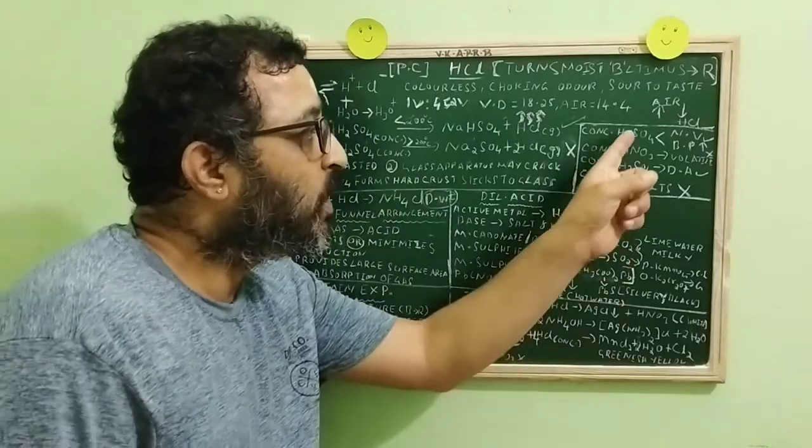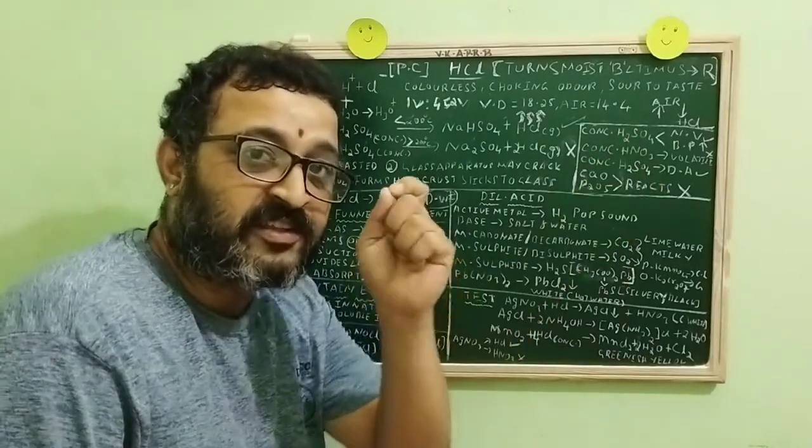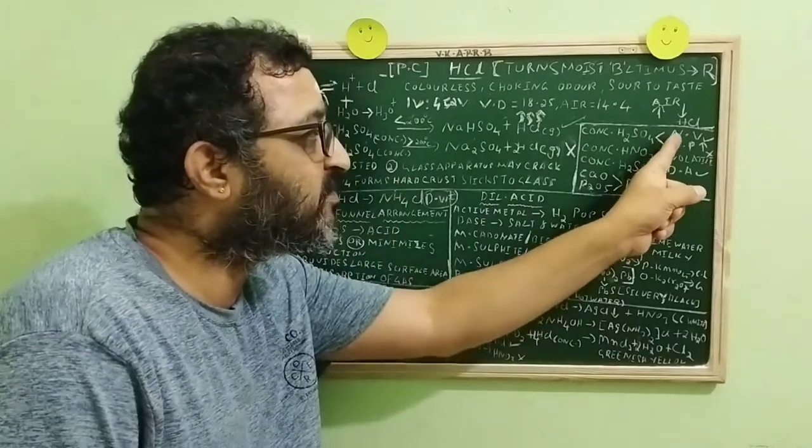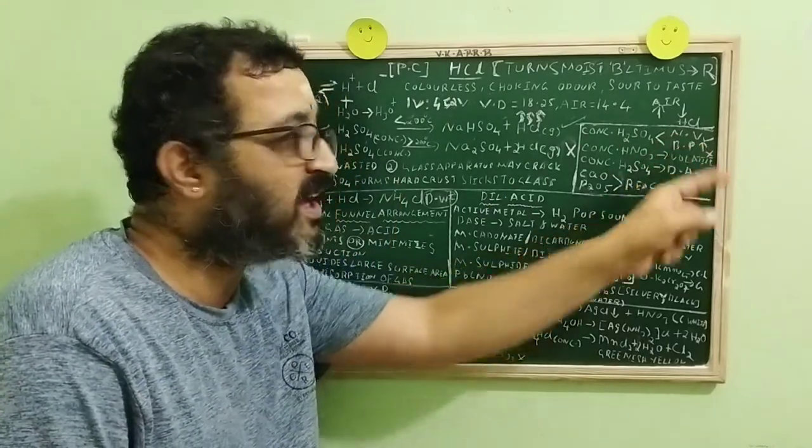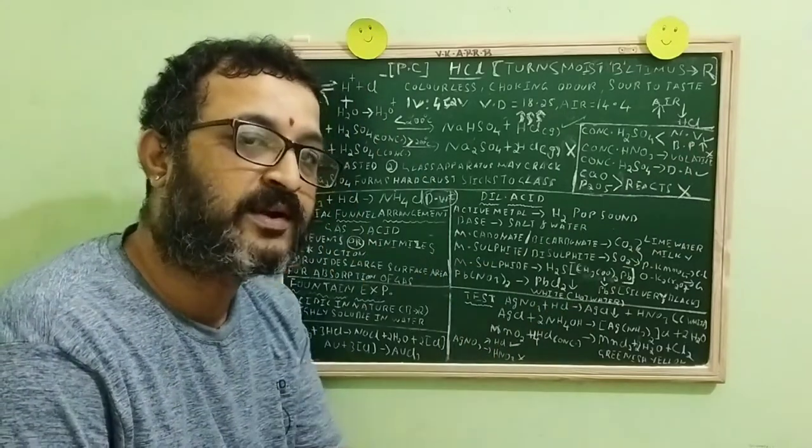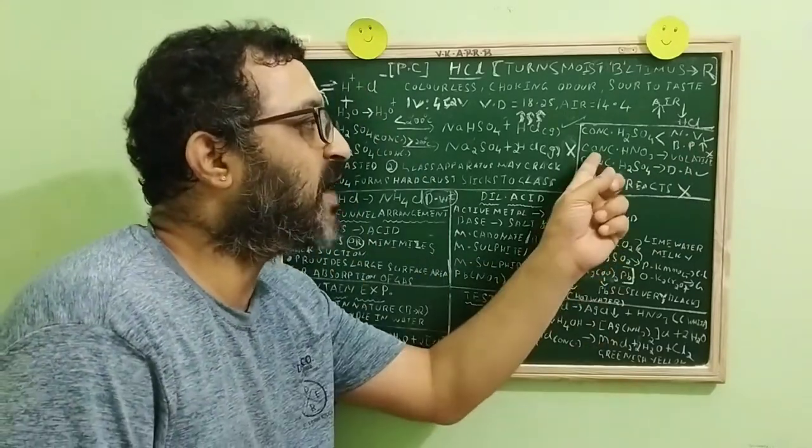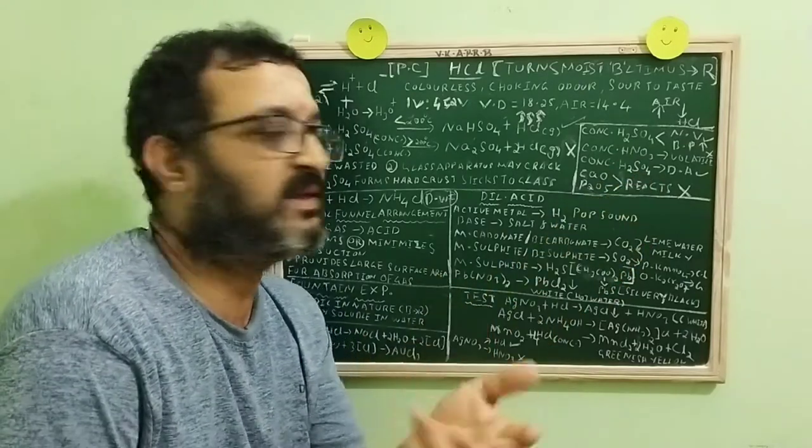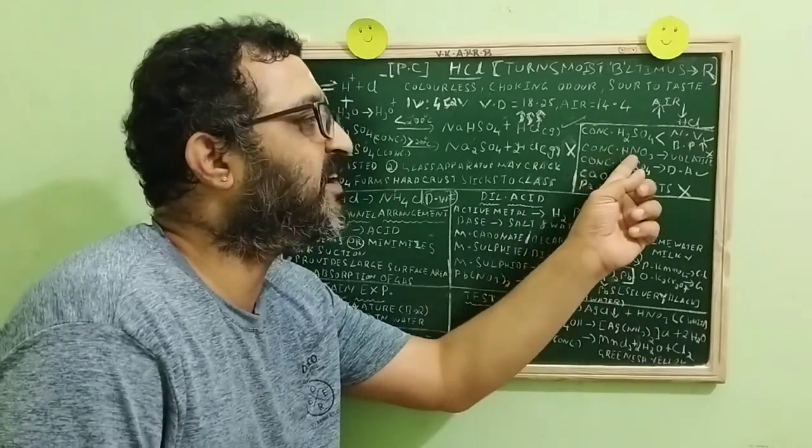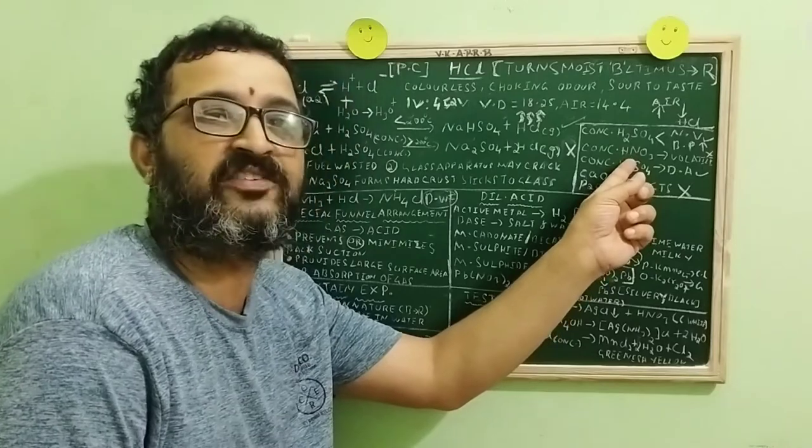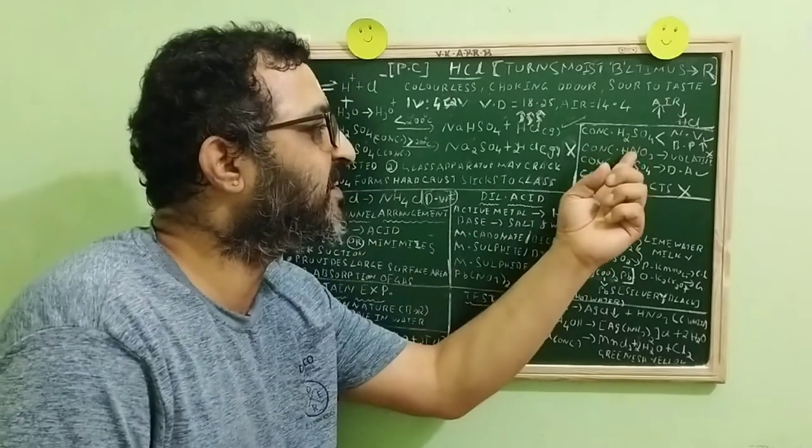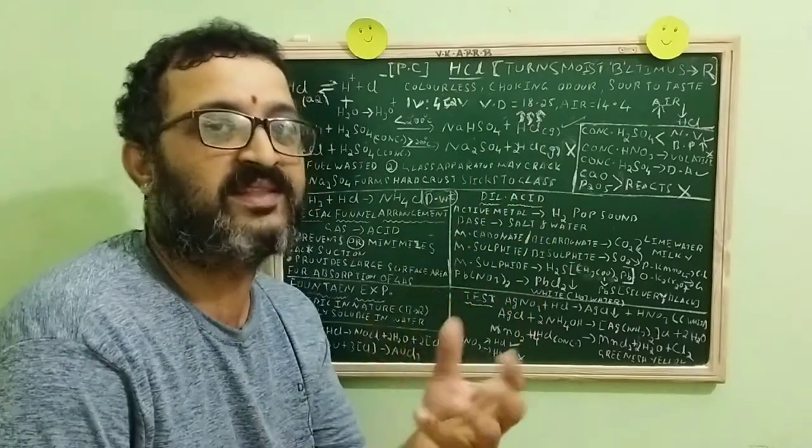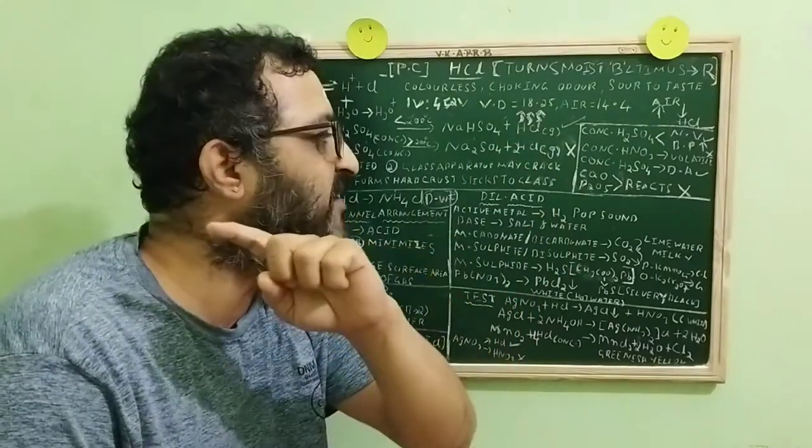Now, the question arises, why concentrated sulfuric acid is used for the laboratory preparation? Definitely, there are two reasons. Sulfuric acid is non-volatile and it has got a very high boiling point. Why can't we use concentrated nitric acid? It's very simple. Nitric acid is volatile in nature. Volatile acid cannot displace one more volatile acid. That's why concentrated nitric acid is not used.